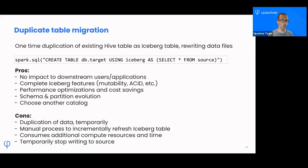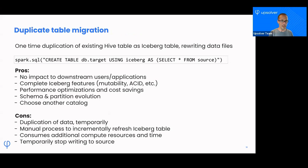The next one is what I call duplicate table migration. This is very similar to the migrate function in the sense that it's a one-time migration, a one-time duplication of the existing Hive tables to the Iceberg tables. The first main difference is this is not a metadata-only operation — you are going to rewrite the data, taking the old Parquet files and rewriting them into the new Iceberg table.